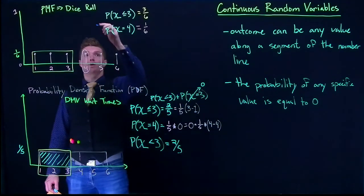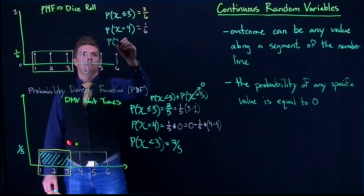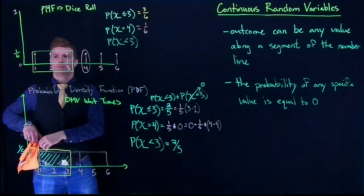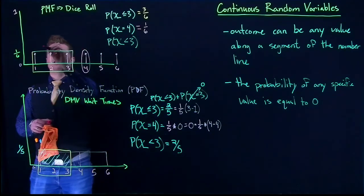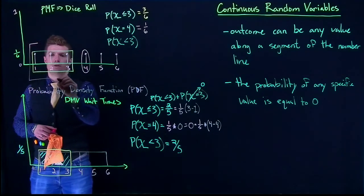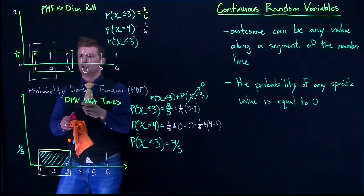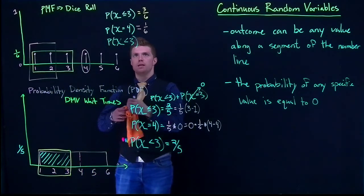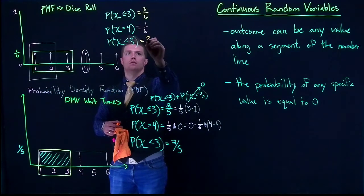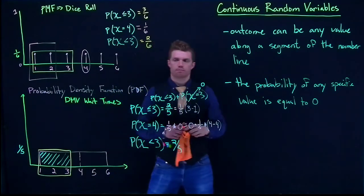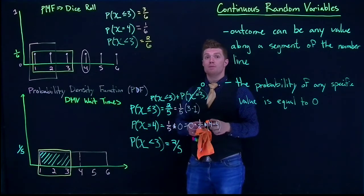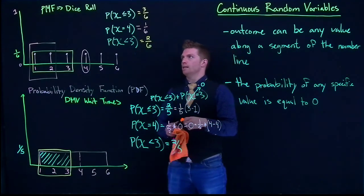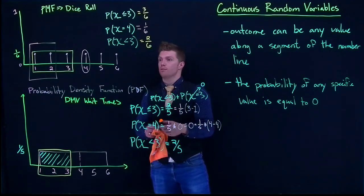By comparison, with our discrete random variable, if we said P(X < 3), we'd circle just the values strictly less than 3 — which are 2 and 1 — giving us 2/6. So with discrete variables, less than versus less than or equal to makes a real difference, unlike with continuous variables.